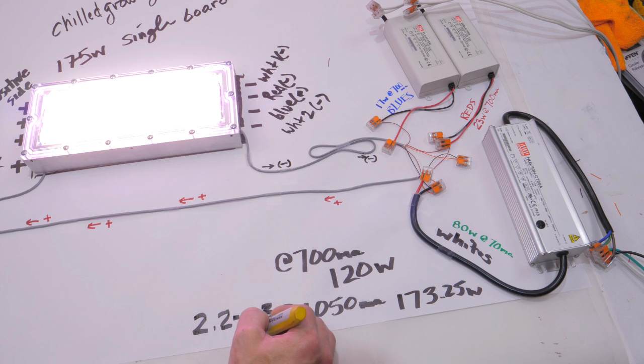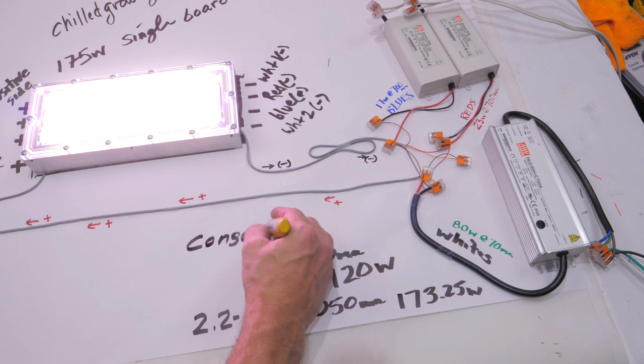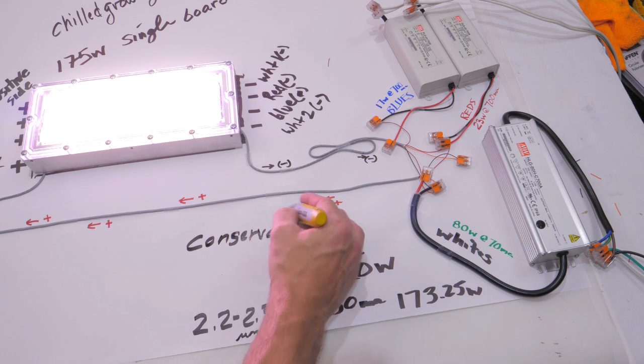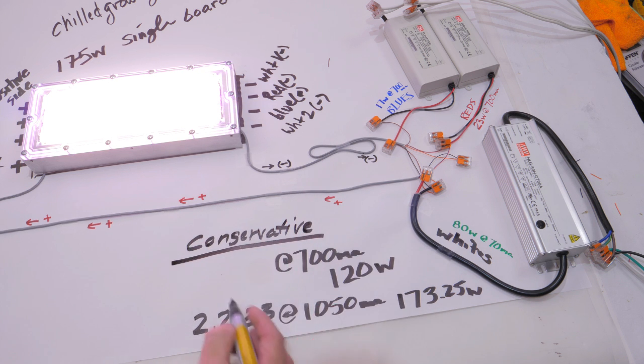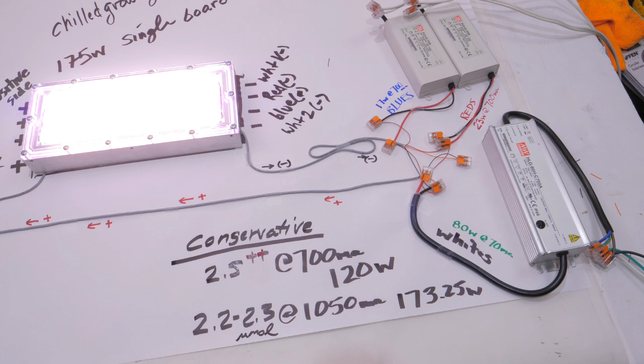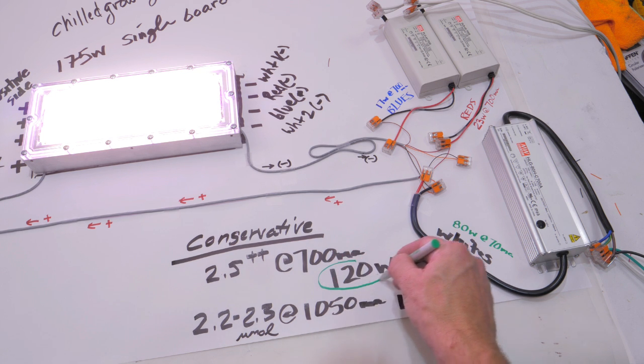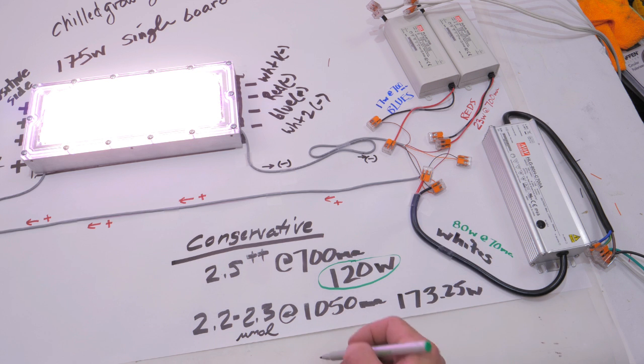Vitalio over at Chilled is being very conservative. He has a bunch of integrating sphere lab data, but he's being very conservative with that data because there are some variables. This clear cover for IP rating so he can sell it to commercial greenhouses actually cuts down on quite a bit of light. You're losing about 6% maybe 7% total photon output for this waterproof ability.